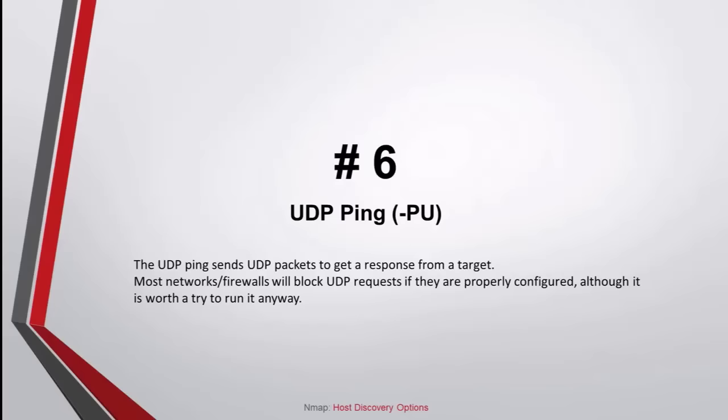Command number 6: UDP ping. The UDP ping sends UDP packets to get a response from a target. Most network firewalls will block UDP requests if they are properly configured, although it is worth a try to run it anyway.